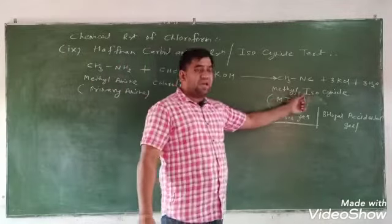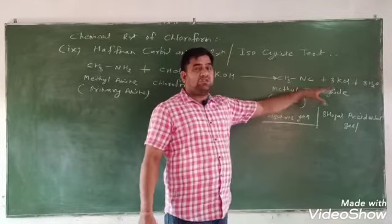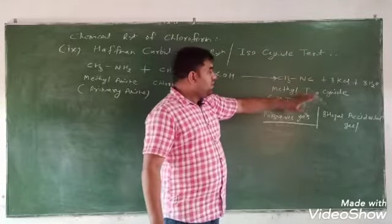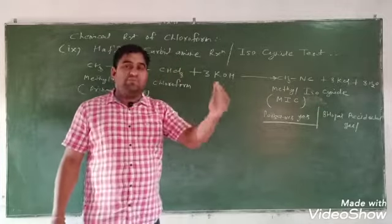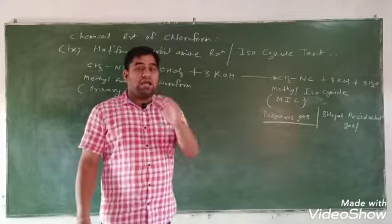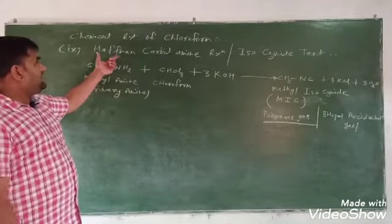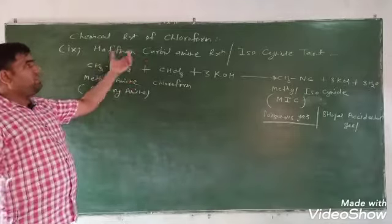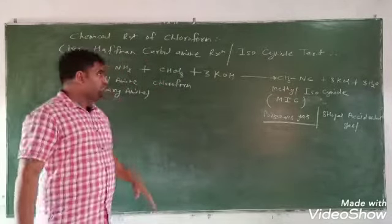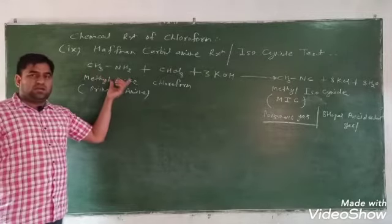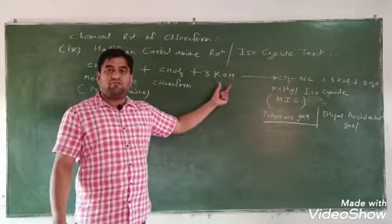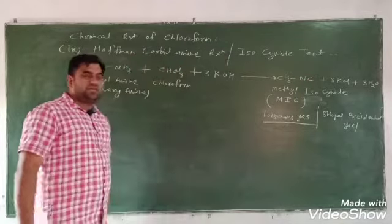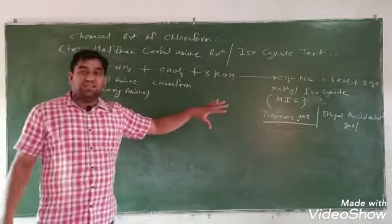In this reaction, the product formed is alkyl isosynide. Isosynide is also called carbylamine, so this reaction is also called the carbylamine reaction or Hofmann carbylamine reaction. It is also called the isosynide test. The reaction involves a primary amine reacting with chloroform in the presence of base, producing alkyl isosynide, 3 KCl, and 3 H2O.